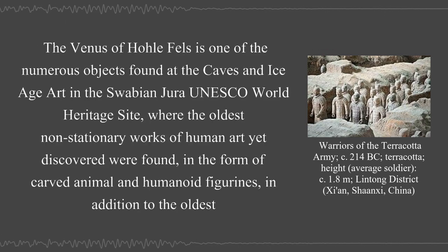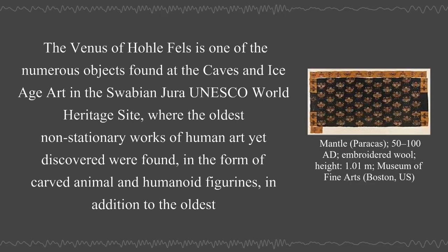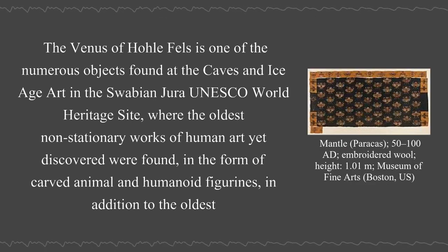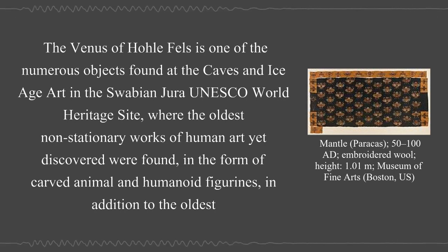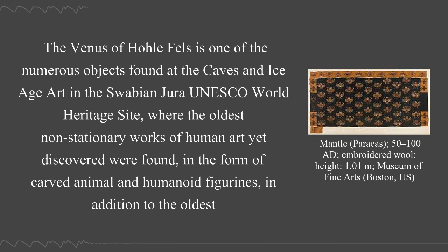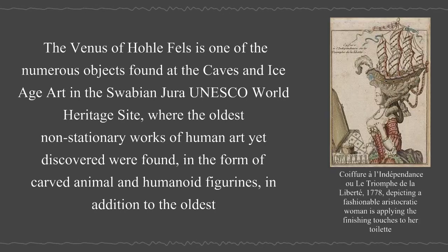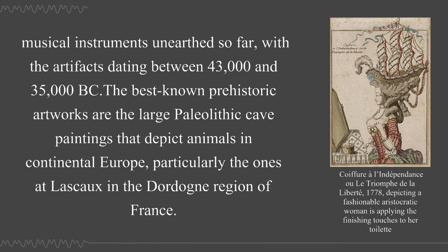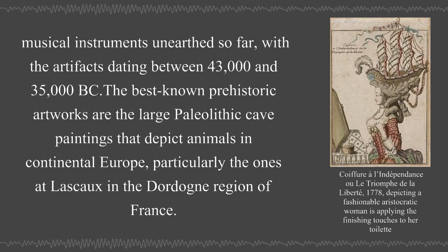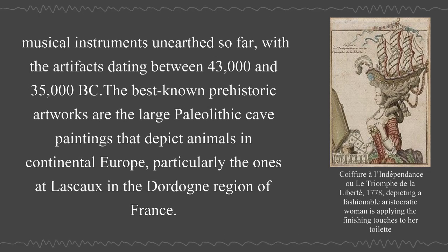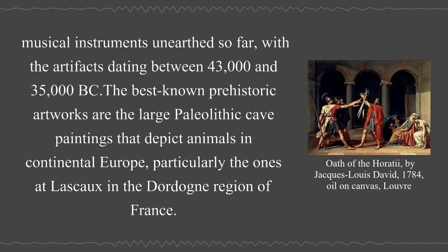The Venus of Hohlfels is one of the numerous objects found at the caves in Ice Age art in the Swabian Jura UNESCO World Heritage Site, where the oldest non-stationary works of human art yet discovered were found, in the form of carved animal and humanoid figurines, in addition to the oldest musical instruments unearthed so far, with the artifacts dating between 43,000 and 35,000 BCE.